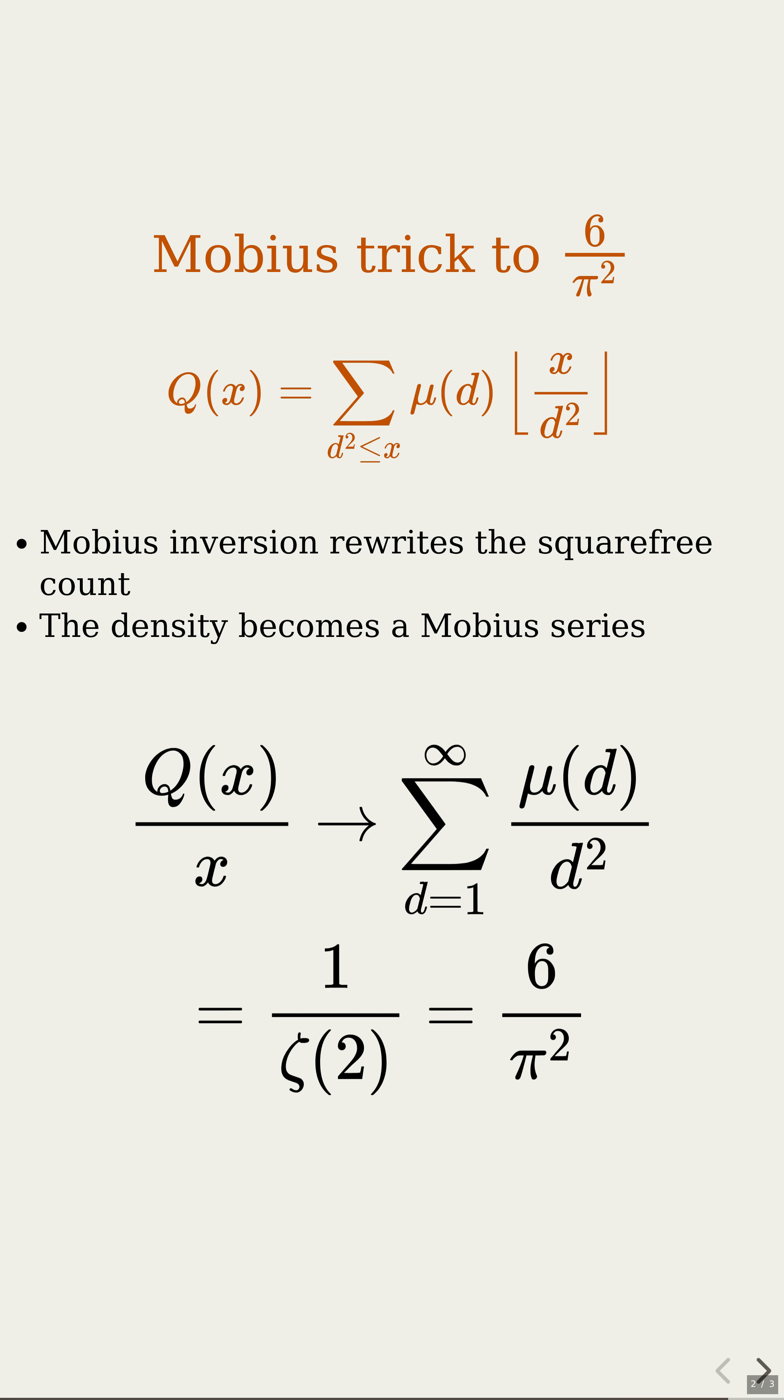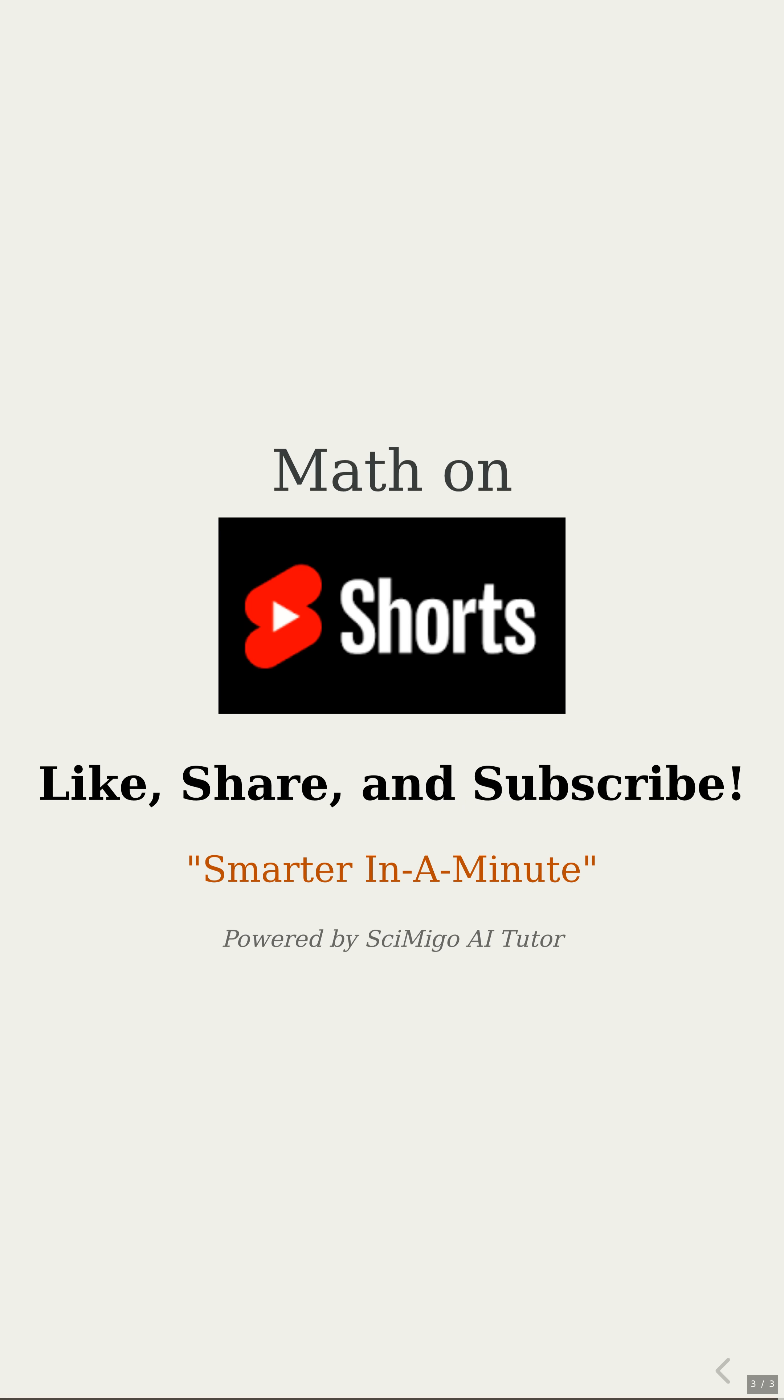Deep fact: that Mobius series equals 1 over zeta of 2, which simplifies to 6 over pi squared. So the density of square-free numbers is literally 6 over pi squared. If you want the full derivation, proofs, and the Mobius machinery, check out my Mobius inversion mini-series on Thinking in Math. Please like, share, and subscribe.